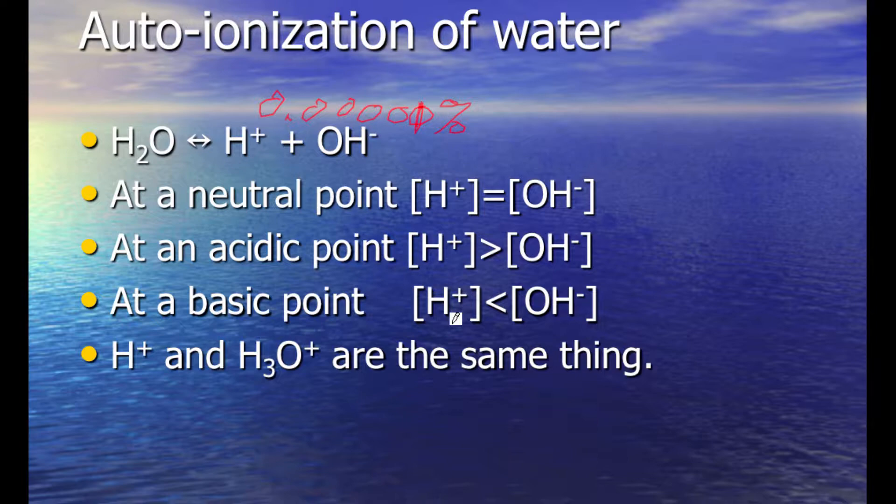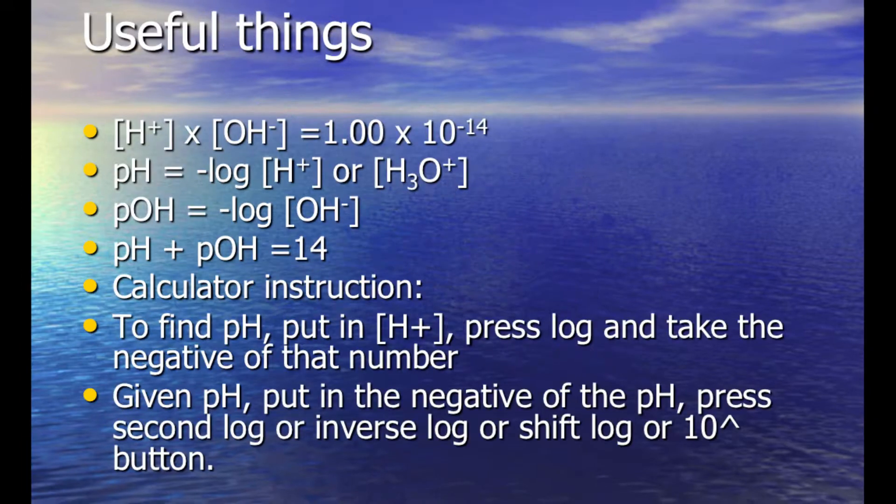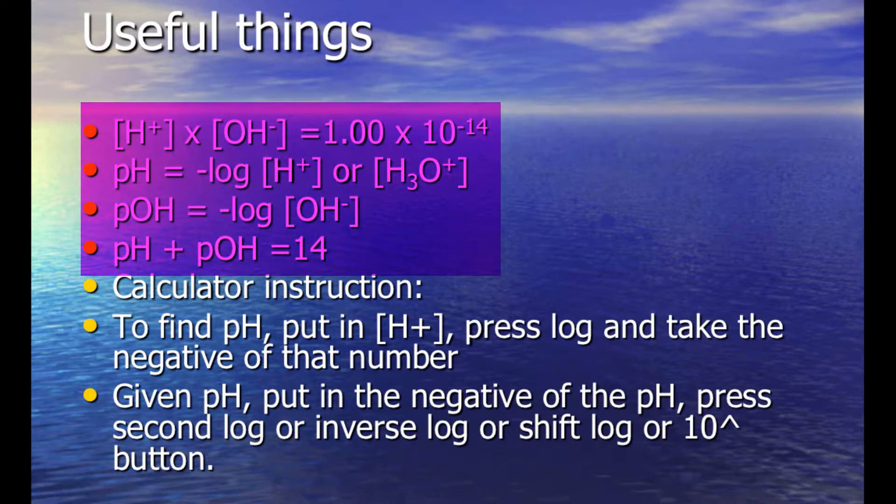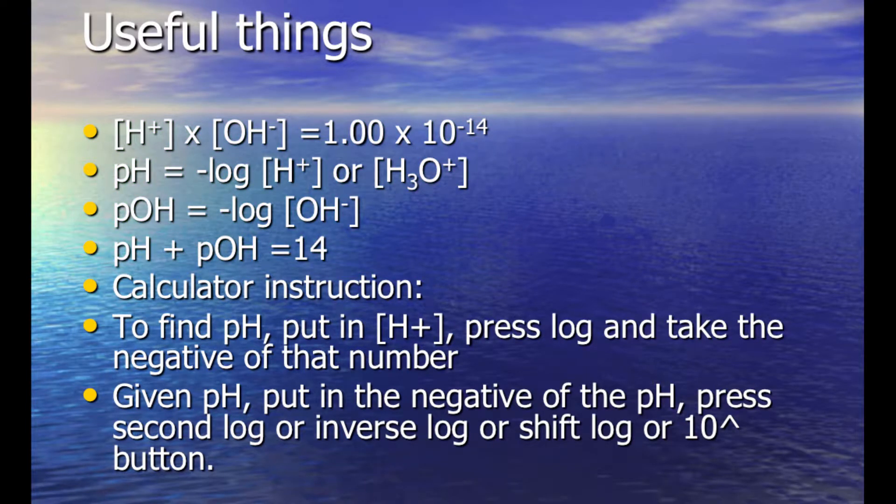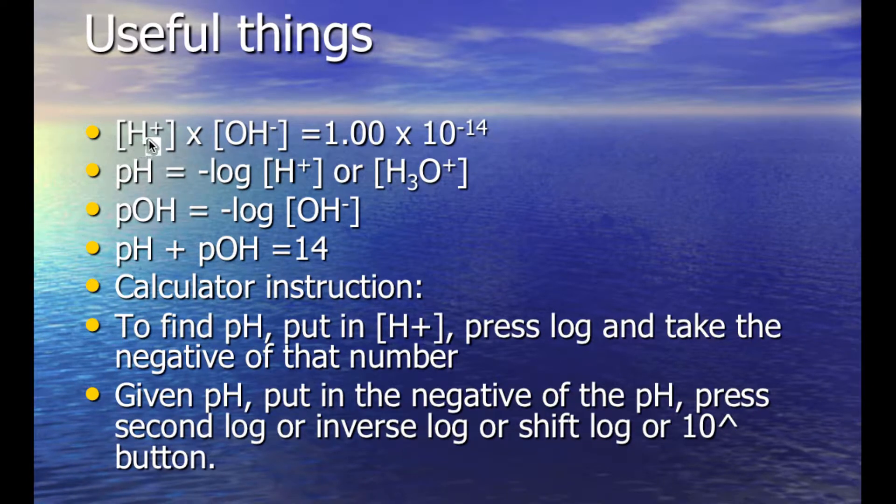I need you to get these facts in your notes. They're also on the very back of your periodic table. The hydrogen ion and the hydroxide ion always multiply together to be 1×10^-14.